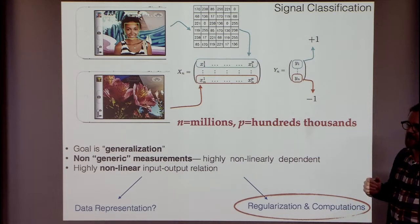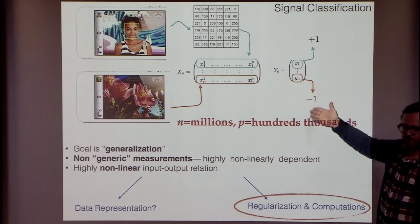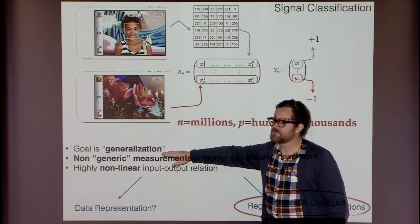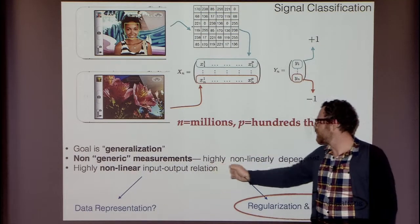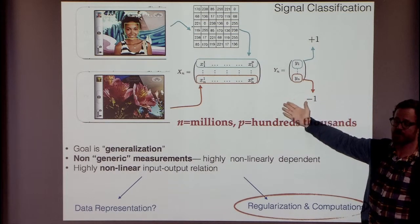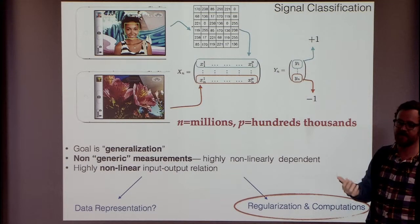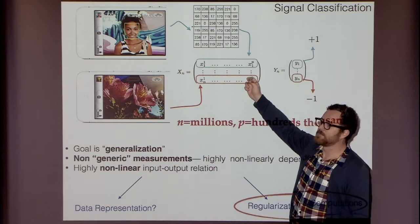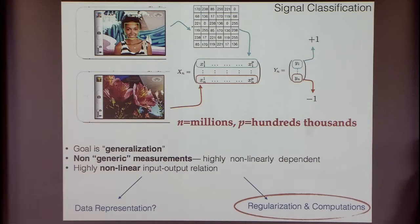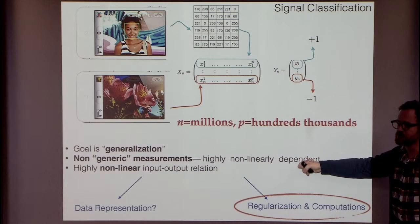I have in mind applications like the one discussed on Wednesday. You can view this as a high-dimensional statistical problem. An important observation: the goal is generalization, to predict new data. The measurements here are not generic — they're not just random Gaussian numbers. They're extremely related to each other in a very nonlinear way. And the relation between input and output is also typically highly nonlinear.